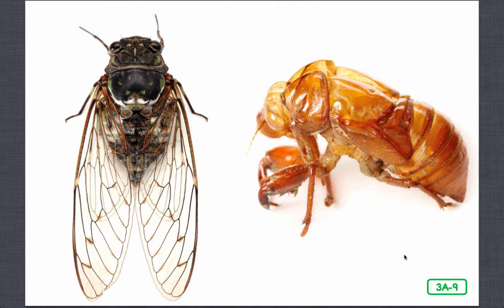The adult cicada lays her eggs on twigs. When the eggs hatch, the nymphs fall to the ground and burrow into the soil, searching for tree roots. They feed on the tree's sweet root sap. Cicadas undergo incomplete metamorphosis, so there is no pupa stage. The nymphs remain hidden beneath the ground, continuing to shed their exoskeletons. Once they are fully grown, they make their way to the surface, shed their skin one last time, and emerge as winged adults.